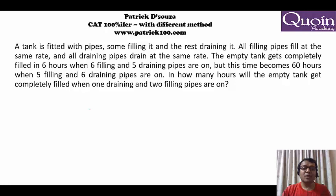Here there are pipes filling it and draining it. Initially the empty tank is filled in 6 hours by 6 filling and 5 draining pipes. So let's say each filling pipe fills X per hour, and the draining pipes drain Y per hour. That means 6X minus 5Y should give you in an hour it will fill 1 by 6. Same if 5X minus 6Y, in an hour it will fill 1 by 60.